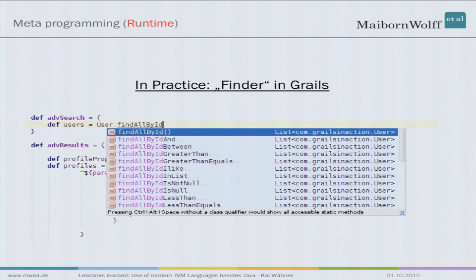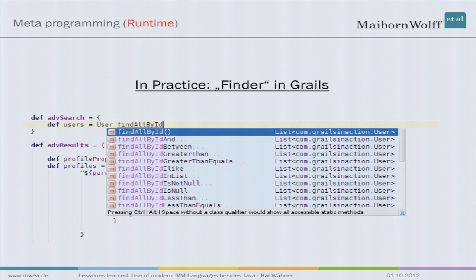Here's a real-world example of where metaprogramming makes sense — it doesn't make sense everywhere because it can make code much more complex, but here it does. This example is the finder in Grails, a web framework for Groovy. When you have a database with several attributes — ID, name, description, and so on — Grails creates all finder methods for you dynamically. So if you have a table with an ID and a name, all the alternatives for finding data are generated for you at runtime by the IDE. You don't have to write them yourself. If you add another attribute like description, it is also added dynamically at runtime. This is a really powerful feature.